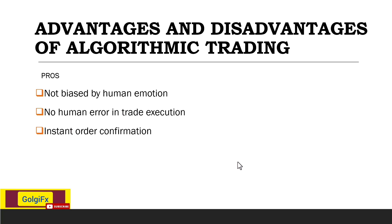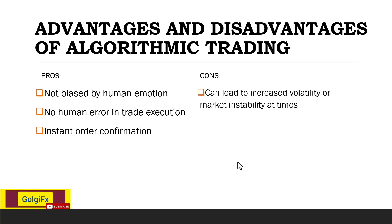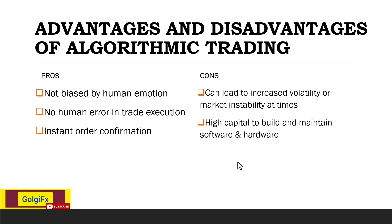Looking at some cons of algorithmic trading: it can lead to increased volatility or market instability at times. With algo trading, there will sometimes be high-impact news events that the algo cannot account for, which can affect your trading. The market could reach a level where your algo places a trade during a major news event, increasing market instability.